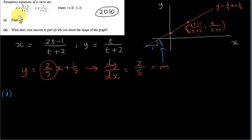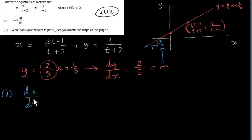In practice we find dy/dx without converting to Cartesian form. When x and y are given in terms of a single parameter t, we compute dx/dt by differentiating x with respect to t, then compute dy/dt, and combine them to find dy/dx. Starting with dx/dt: the function x = (2t − 1)/(t + 2) is a quotient, so we apply the quotient rule.